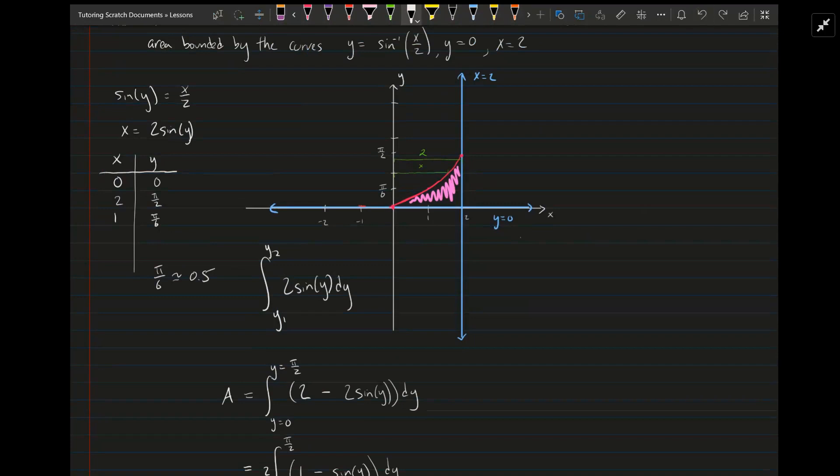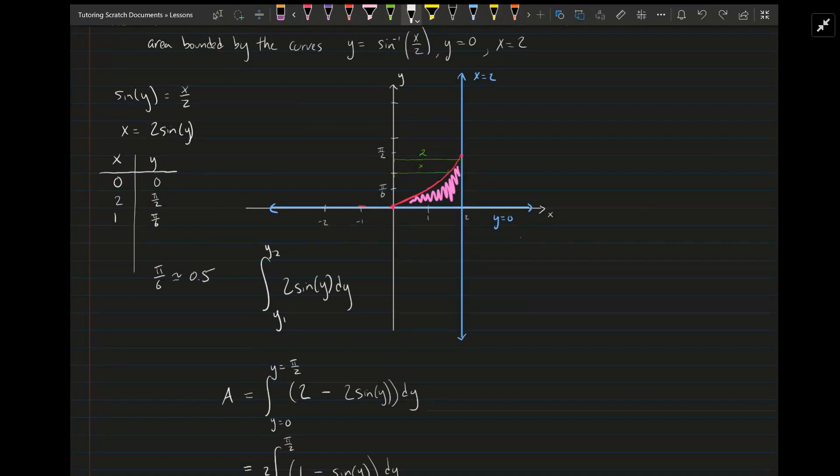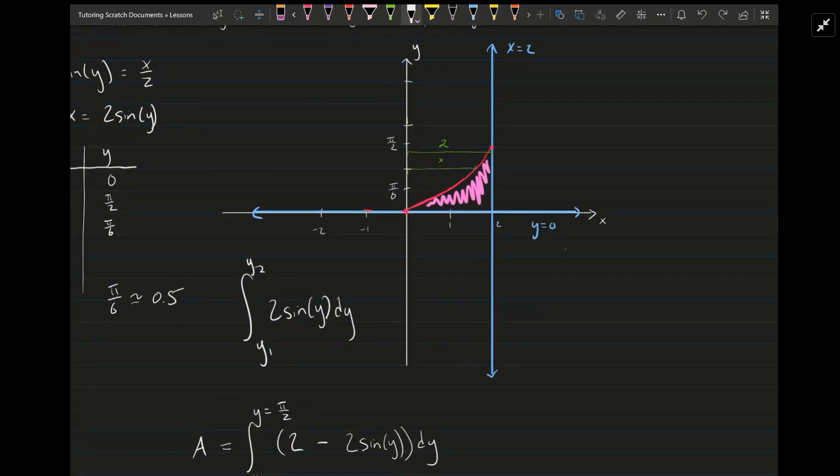We want the pink area, which is a little bit harder because it's not directly connected to the x-axis. But the way you do that is you take every value, you can see like in green here, this length is 2. And then the length of this little pink part at any point is 2 minus its x at any point.